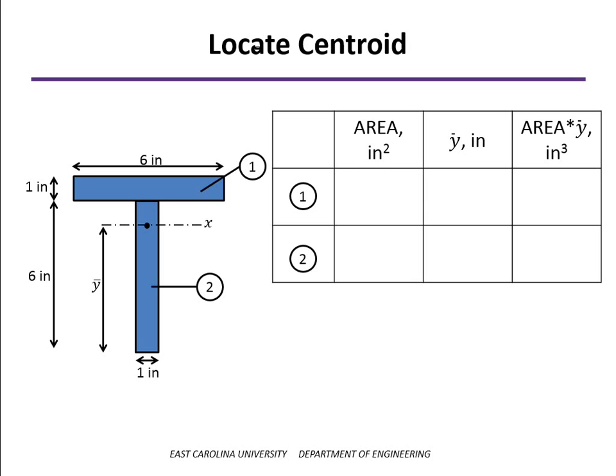What we're really doing is taking a weighted average of the area times y bar. We'll find the area of each segment, its centroid location relative to our datum, and take the product of those, add them together, and divide by the total area.